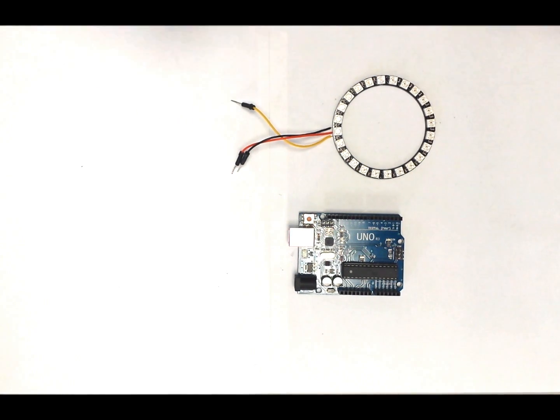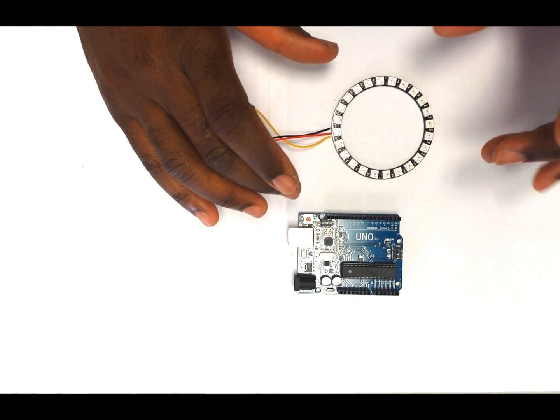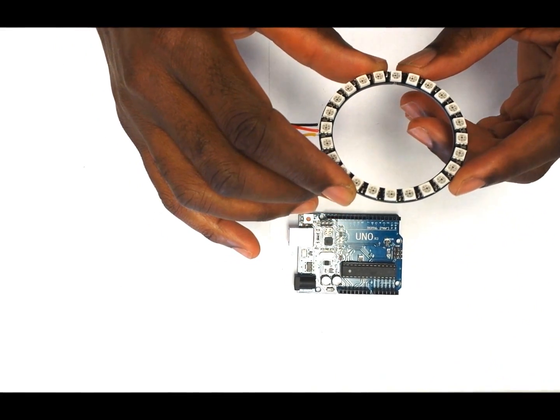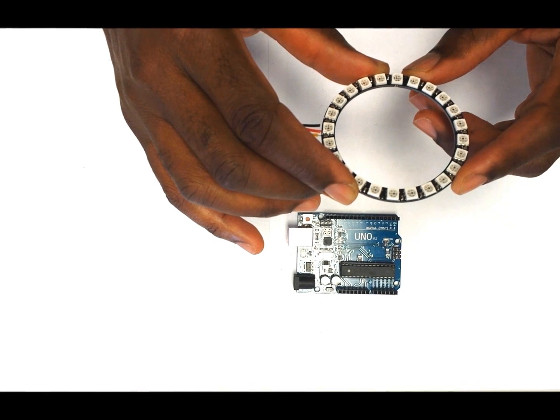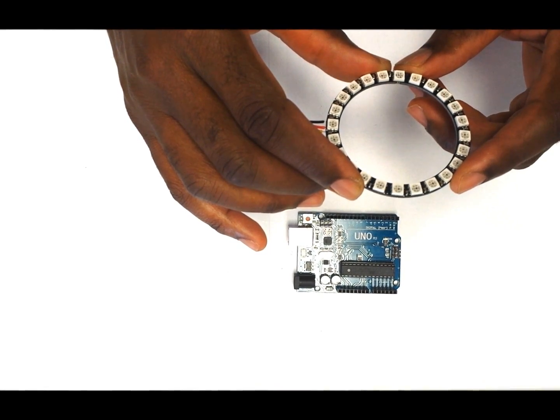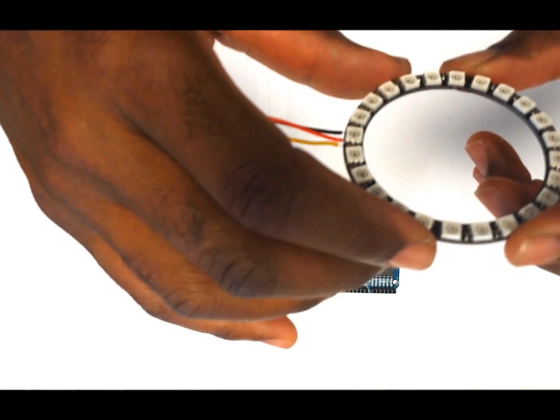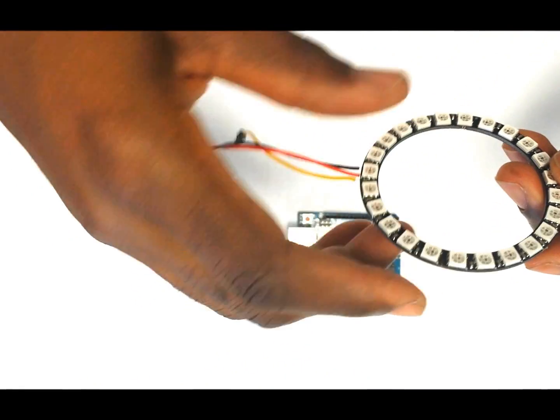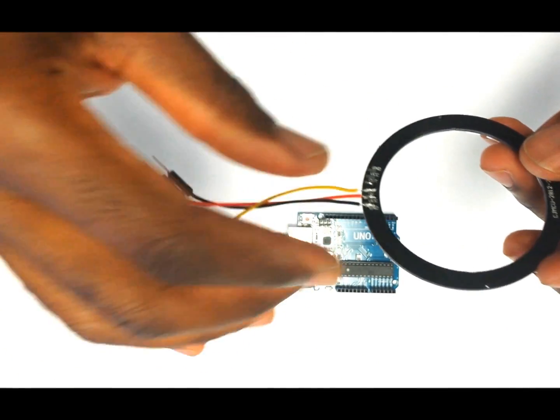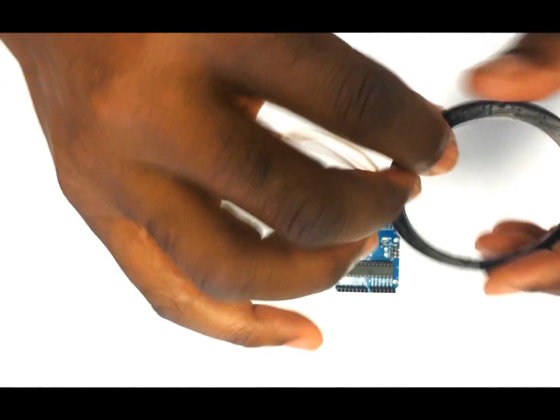Hi guys, I just want to share with you something that I received in the mail today. This is a Neopixel ring, code number WS2812B 5050 RGB LED ring. I bought this a while ago and just got it in the mail today. It doesn't come with the wires, so basically what you get is this ring.